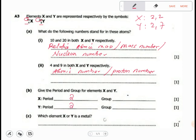But the group is determined by the number of electrons in the outer shell. X has got 2 electrons in the outer shell, so this is group 2. For groups, you write in Roman numerals, not in numbers. Y has 7 electrons in the outer shell, so this is group 7.